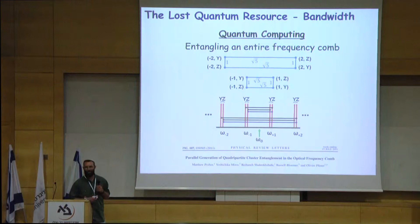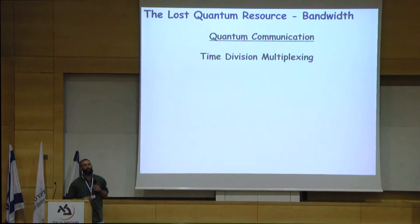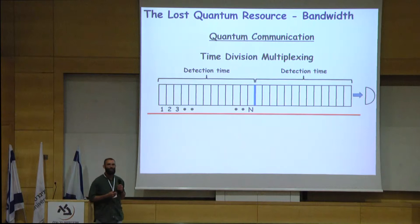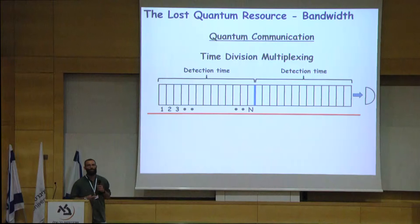Since the homodyne measurement that we apply can only measure a single frequency mode at a time. And in quantum communication, where we would like to increase the rate at which we can process quantum information, the natural path is by exploring the frequency or time domain, such as frequency or time division multiplexing, where we divide a single detection time of the detector into many time bins, adding an additional time stamp onto the single photon that we detect.